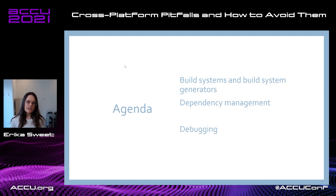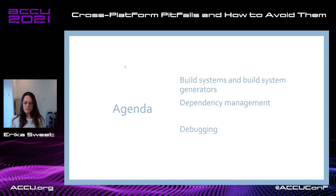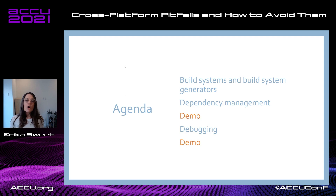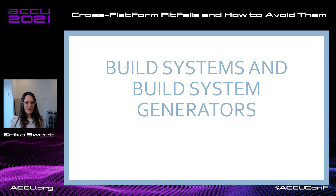I've split this talk into three sections: build systems and build system generators, dependency management, and debugging. A primary focus will be CMake's new CMakePresets.json file. I'll be giving two demos to showcase new developments my team at Microsoft has been working on. Even if you're not using Visual Studio, VC Package, or anything in the Microsoft ecosystem, the problems I'll discuss — whether with a build system generator or CI system — are transferable and not tied to just one IDE.